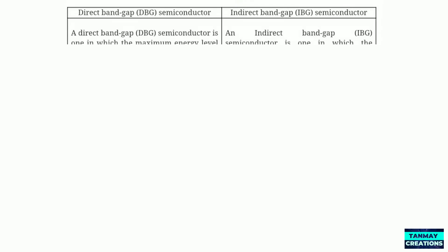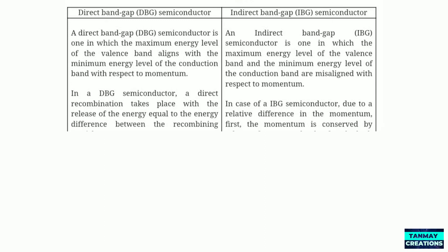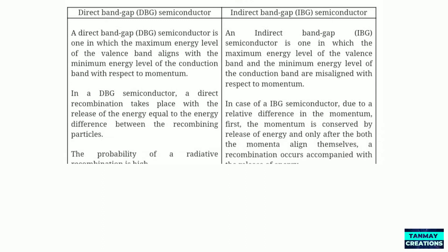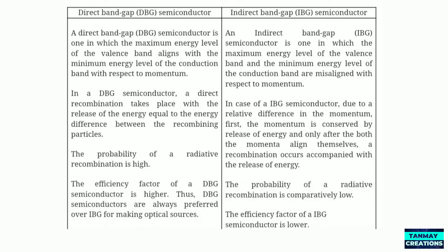For ready reference, the differences between direct band gap semiconductors and indirect band gap semiconductors are summarized in a table. The first difference discusses the alignment of the top of the valence band and bottom of the conduction band. The second covers recombination of electron and hole. The third indicates which process is more probable, and the fourth explains why direct band gap semiconductors are preferred over indirect ones for making optical sources.